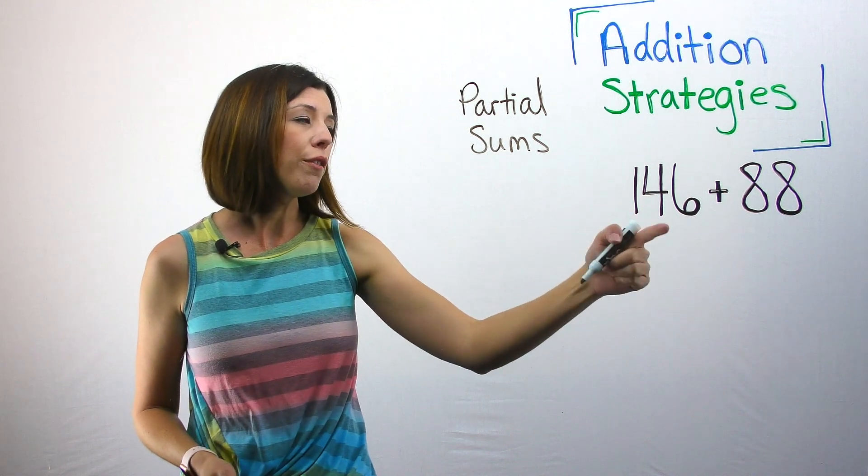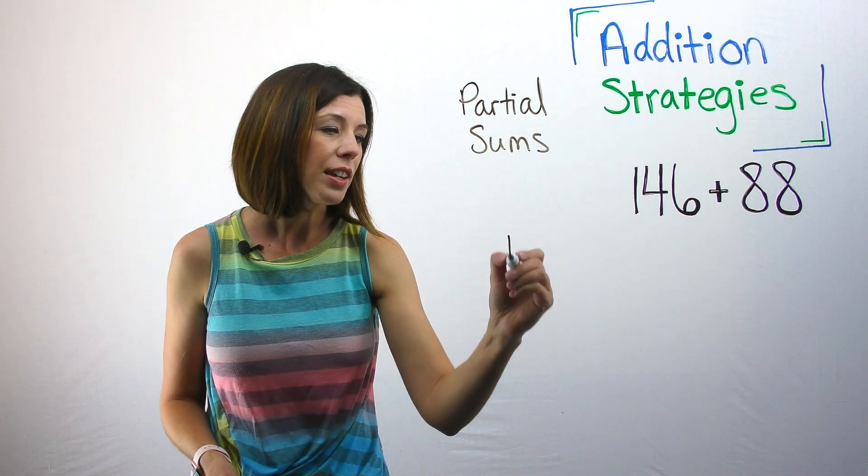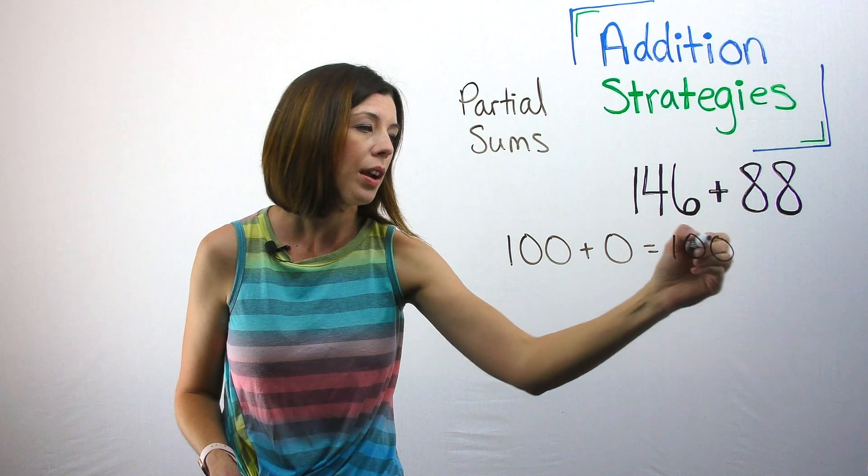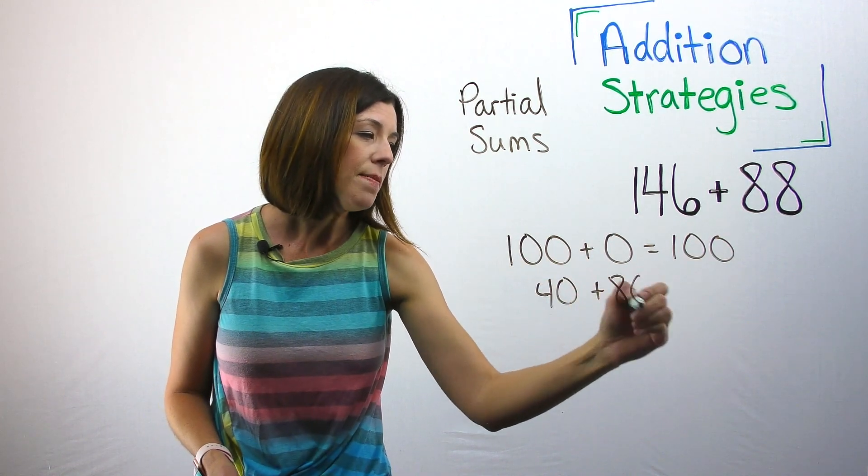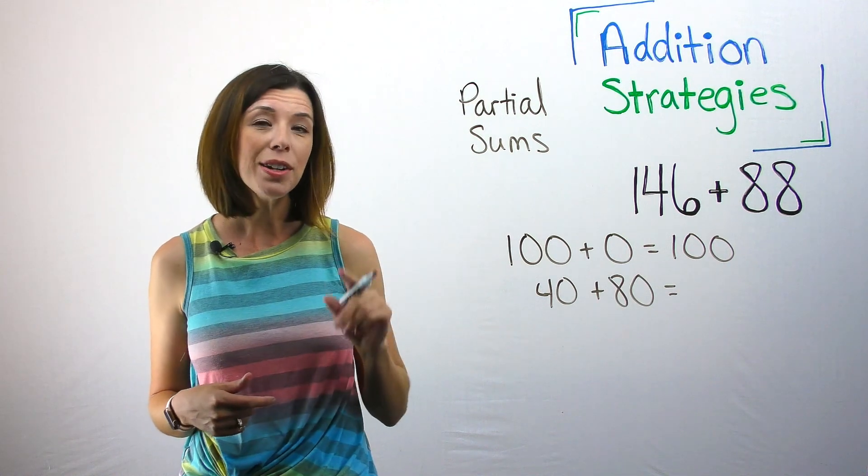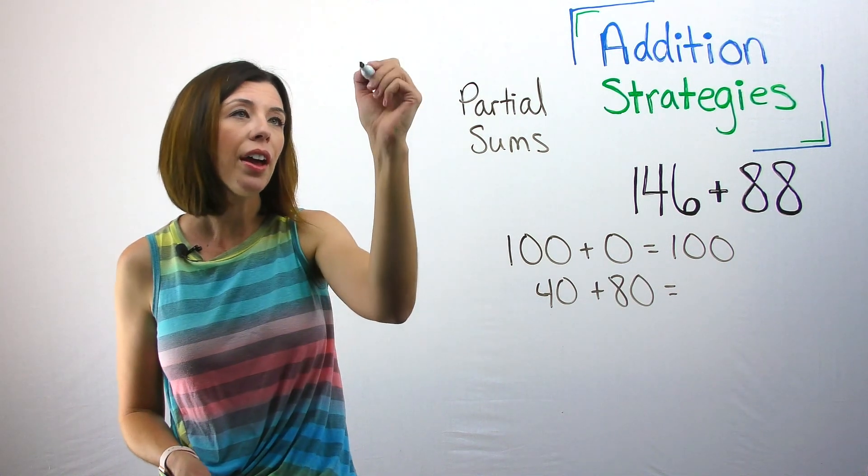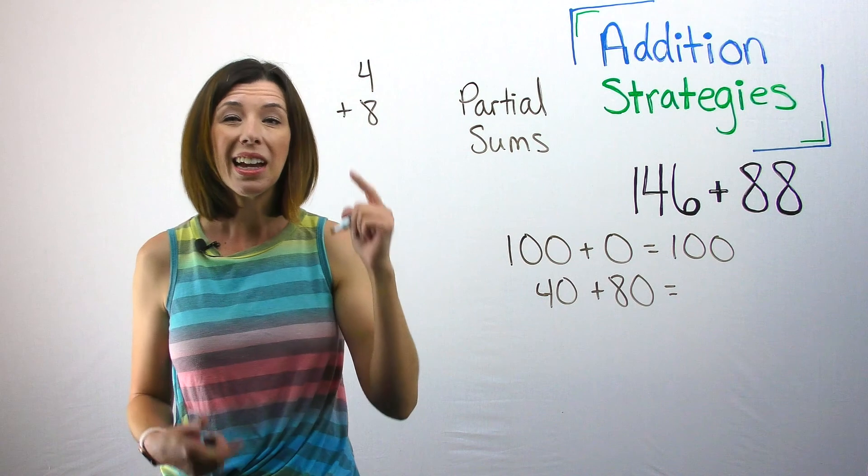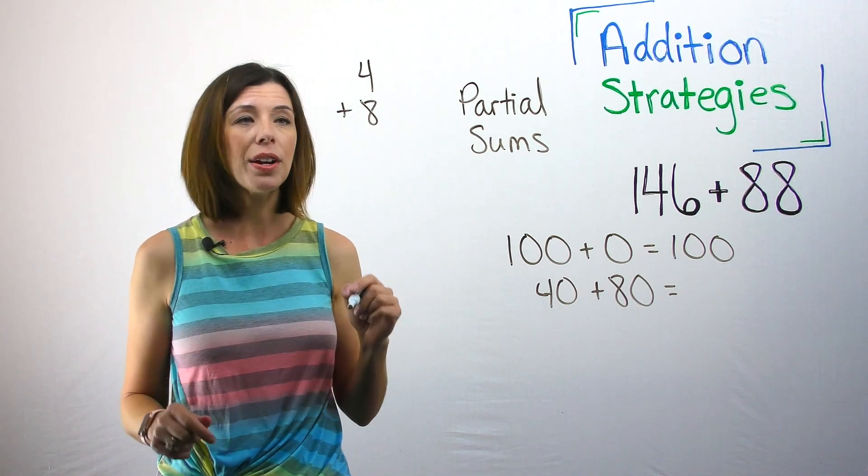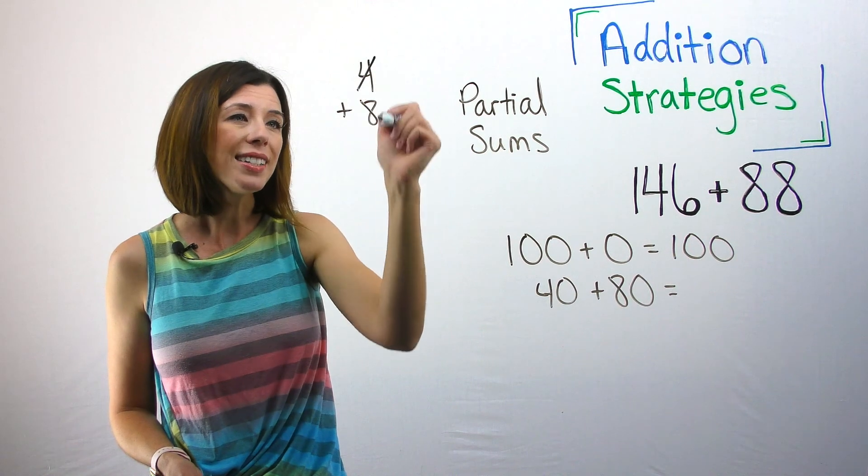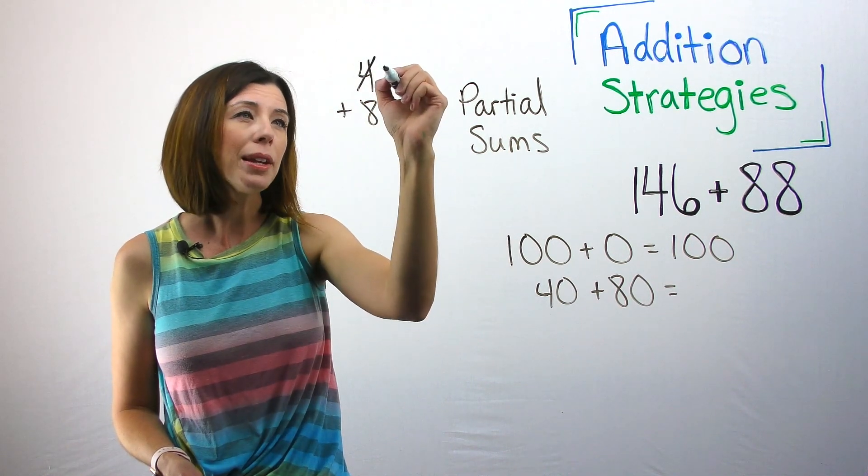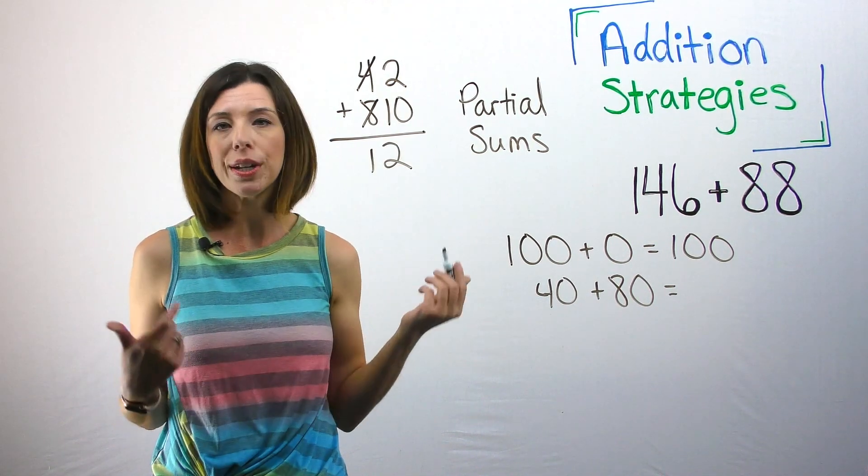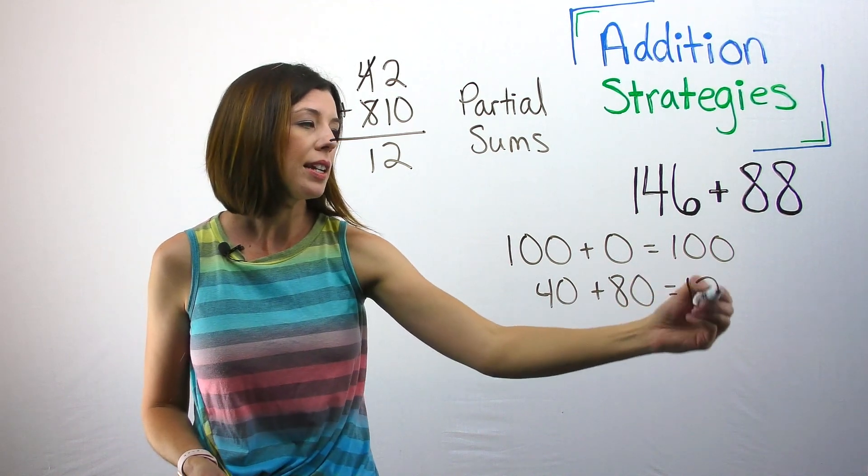Instead of thinking of this as 146 plus 88, I'm going to think of this as 100 plus, I know there's no hundreds in 88. So that's going to give me 100. Then I've got 40 plus 80. Here's where the make a 10 strategy comes in really handy. Because if I know that four plus eight is 12, then I know that 40 plus 80 is 120. Just to refresh your memory, the make a 10 strategy goes like this. I can take, I see that this eight is two away from 10. So I'm going to take two away from the four, make this a 10. And now I can easily add two plus 10, which is 12. So I know that 40 plus 80 is 120.